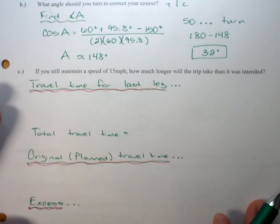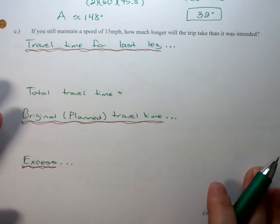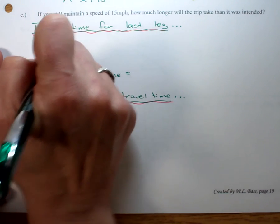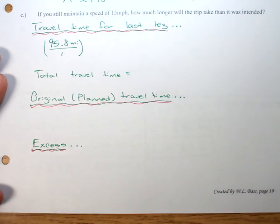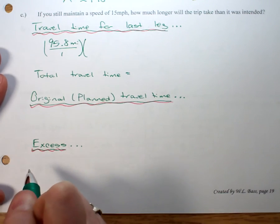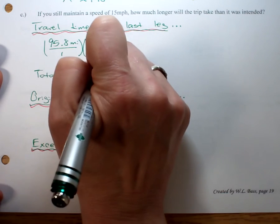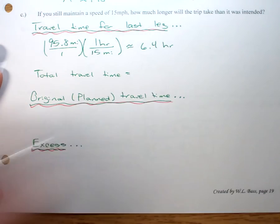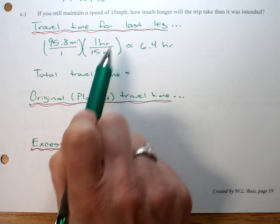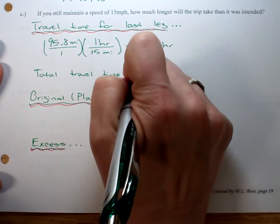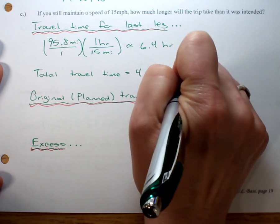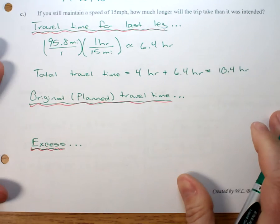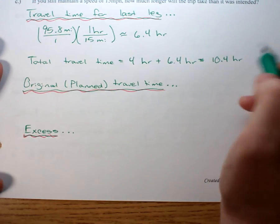Last little bit is some travel time. The travel time for the last leg: we have 95.8 miles to go. From the original problem it told us we were traveling 15 miles per hour, so we need our miles to cancel: 95.8 miles divided by 15 miles per hour equals 6.4 hours to travel that last leg. So my total travel time is the original four plus the new 6.4 - in other words, my total trip is 10.4 hours. I'm really feeling like we should have gotten on an airplane because that seems like a really long time.